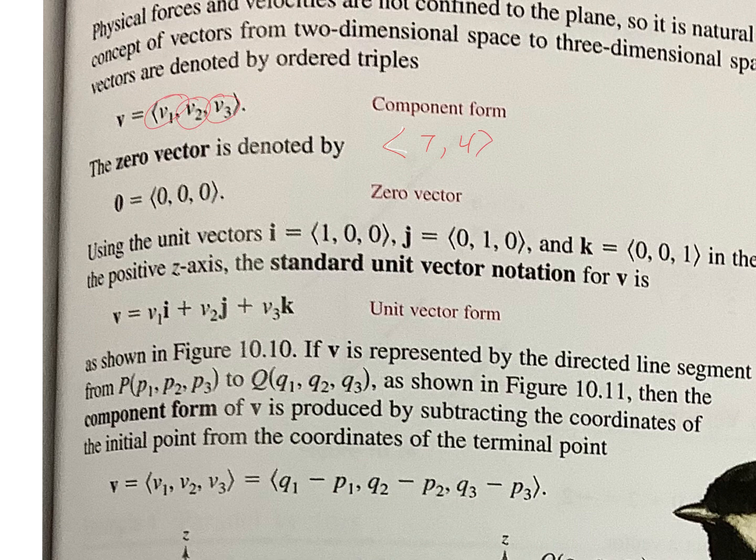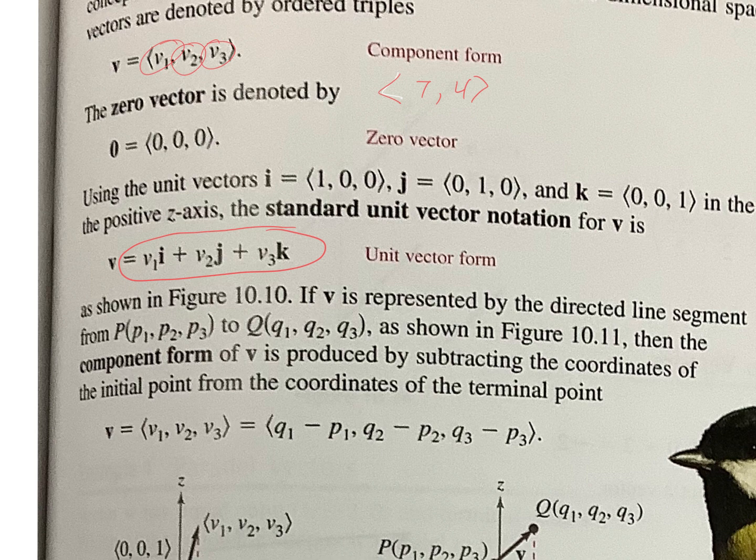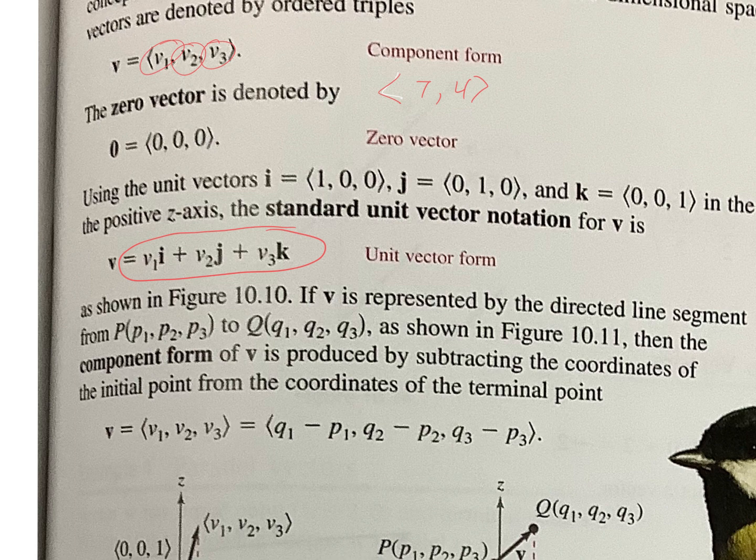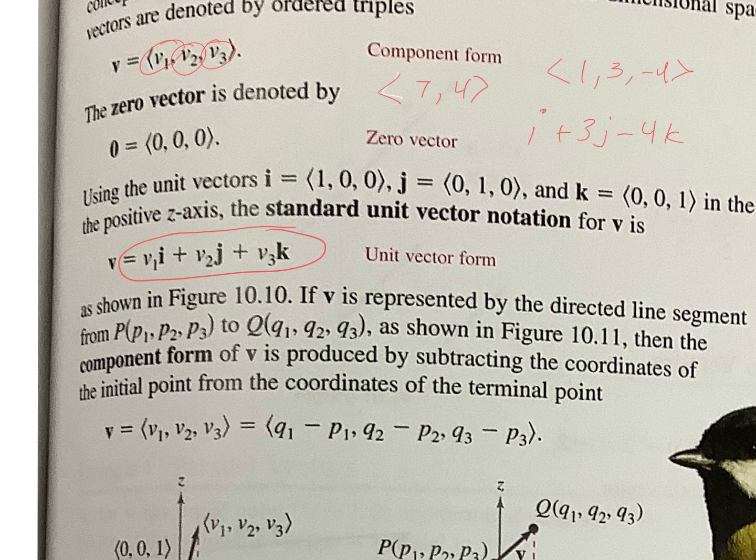You guys see that? It can be written in standard notation like this. Before it was with an i and a j. Now it's with an i, j, and a k. Whatever number is in front of the letter is what the number represents. So if you had like i plus 3j minus 4k, this vector would be - what number is in front of i? One. So it would be 1, 3, negative 4, right? Does that make sense?